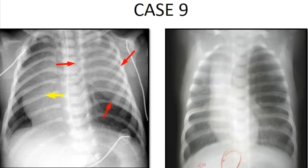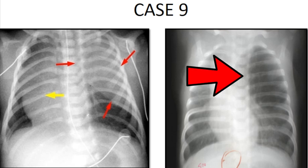Case 9: a newborn child with respiratory distress. X-ray shows an opaque left upper lobe with marked mediastinal shift to the right. X-ray of the same child after 10 days shows an overexpanded left upper lobe with mediastinal shift to the right. So we are dealing with congenital lobar emphysema. This is common in the left upper lobe, right middle lobe, and right upper lobe, and is usually not seen in the lower lobes.